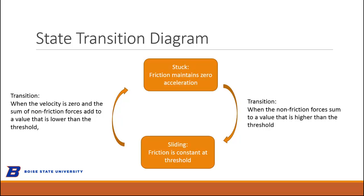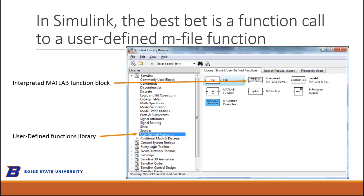We want to capture that in Simulink, but we'd agree that a purely graphical block representation doesn't really fit that framework well. So we'll use a user-defined function — we're going to go into the editor, write our own function, and store it in an M file. The way to access a custom function in Simulink is through the interpreted MATLAB function block, found in the user-defined functions library. Then we'll write the function in the MATLAB editor.